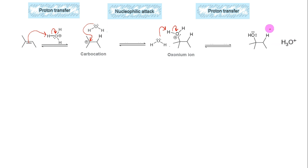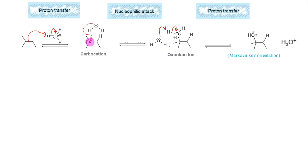Water is added across the carbon-carbon double bond in Markovnikov's orientation — that means hydrogen is added to the less substituted carbon, whereas the hydroxyl group is added to the more substituted carbon. This is because the intermediate is a carbocation and the first step is electrophilic addition of a proton. The mechanism is similar to electrophilic addition of a hydrogen halide, therefore Markovnikov's orientation is observed.